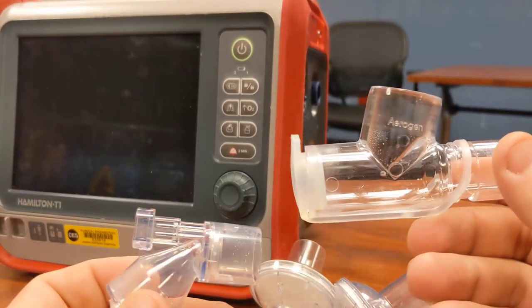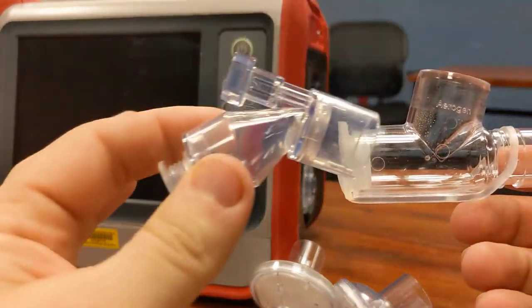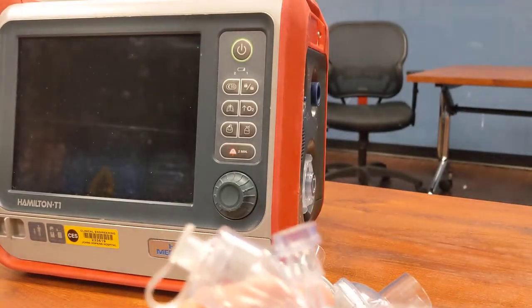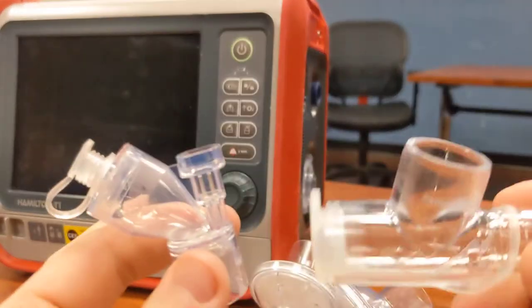These are the disposables. You have a T piece and a canister where the nebulization goes in. Those are the two disposables that we're going to have.